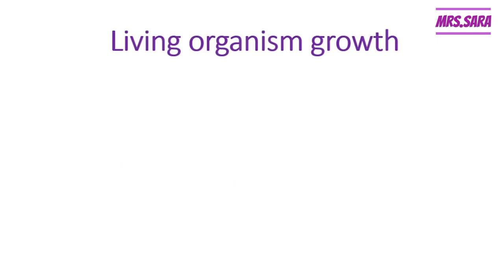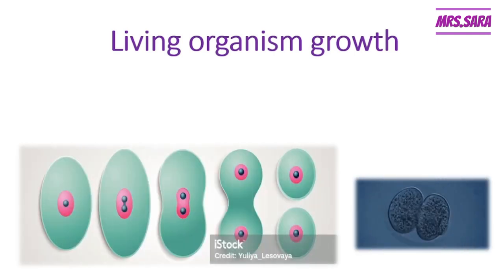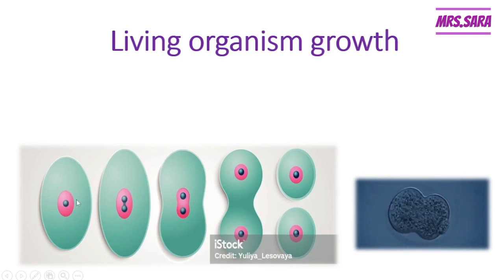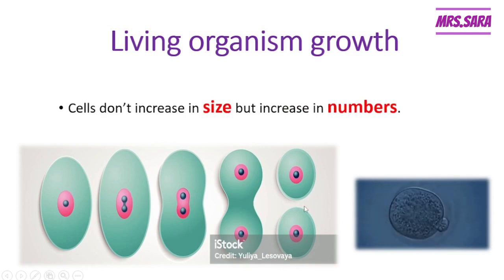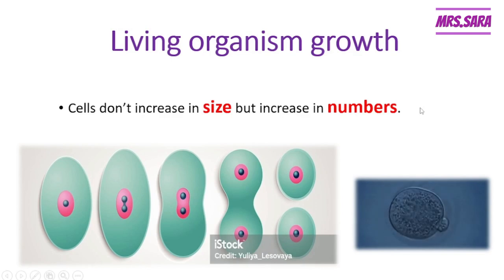All living organisms grow, Primary 6. How? By increasing the number of cells. As you can see here, one cell becomes two cells. So the number of cells is increasing, not the size. Cells don't increase in size — they don't become bigger — but they increase in number.